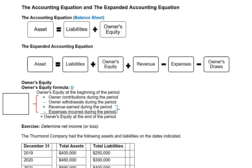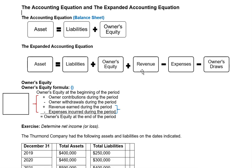Next, we have the expanded accounting equation: assets equals liabilities plus owner's equity plus revenue minus expenses minus owner's draws. How the expanded equation is different is that it breaks out our owner's equity. Owner's equity is made up of four things. It includes the owner's contributions — when the owner makes contributions to the business — the owner's draws, which is money the owner takes out of the business, plus revenue minus expenses.